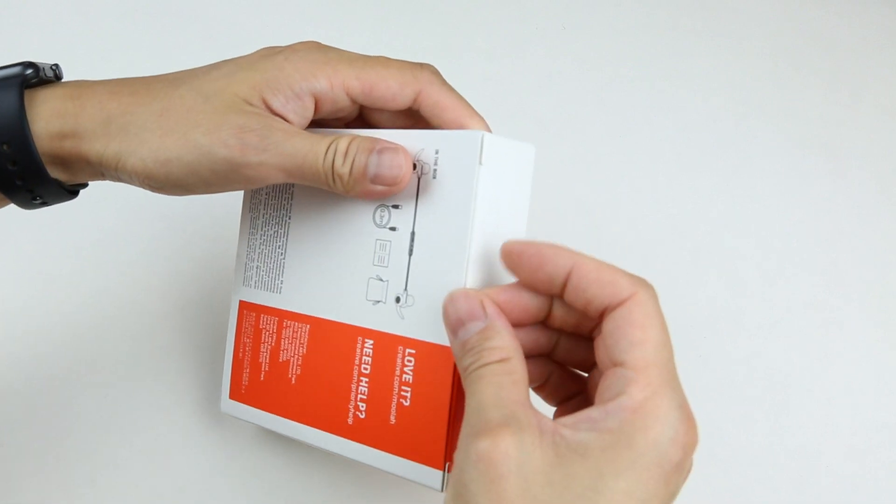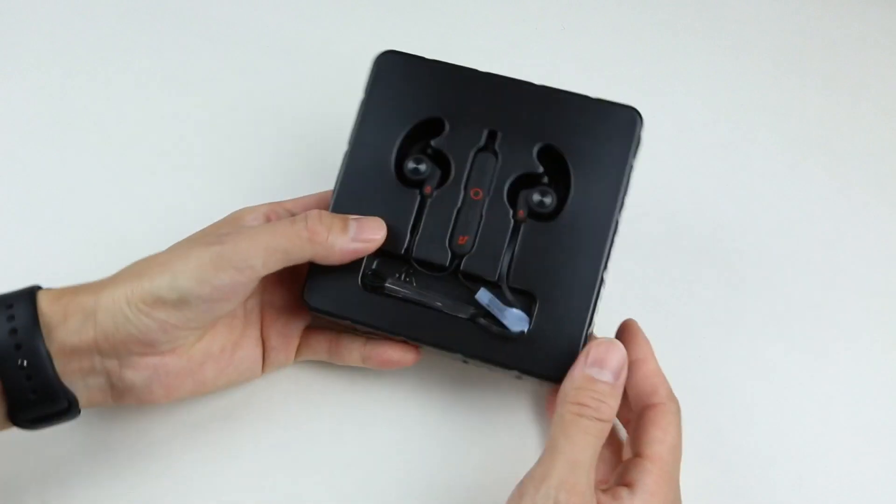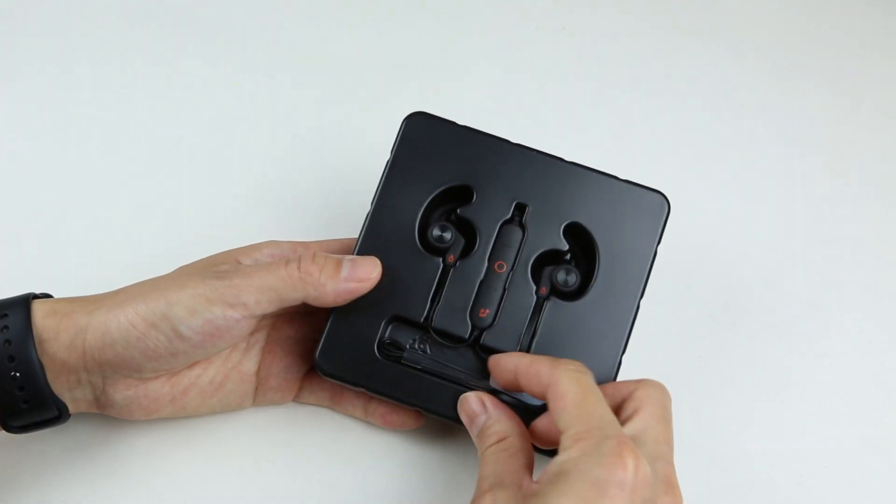And now let's crack it open and see what's inside. Inside of this package we can see a black plastic cutout. The earbuds are mounted in the middle.